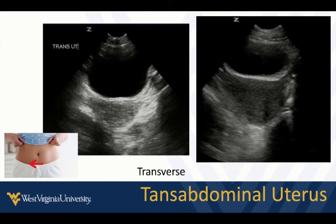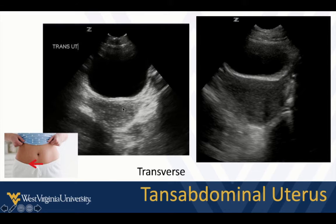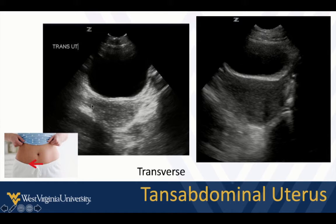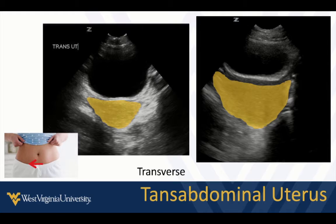We also do transverse views, which is often what we're going to do when looking for free fluid. We see the bladder, and as we fan — usually more towards the patient's head — we will see the uterus. Usually it's going to look like it's posterior to the bladder, although that depends on how full the bladder is and the orientation of the uterus, which can be a little variable. It's this muscular-looking structure usually behind the bladder.